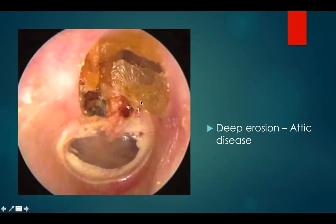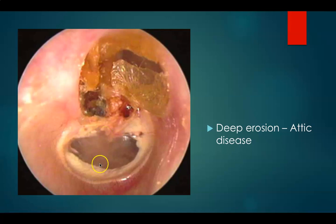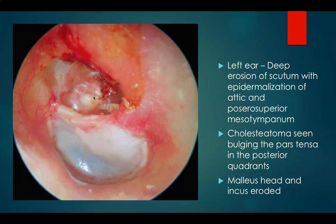This is the right ear. This is a deep erosion and it is attic disease. Here you can see a deep erosion of the scutum and cholesteatoma inside. This is your left ear — deep erosion of the scutum with epidermalization of the attic and posterior mesotympanum. You can see cholesteatoma bulging the posterior part of the drum. The malleus head and incus are eroded.